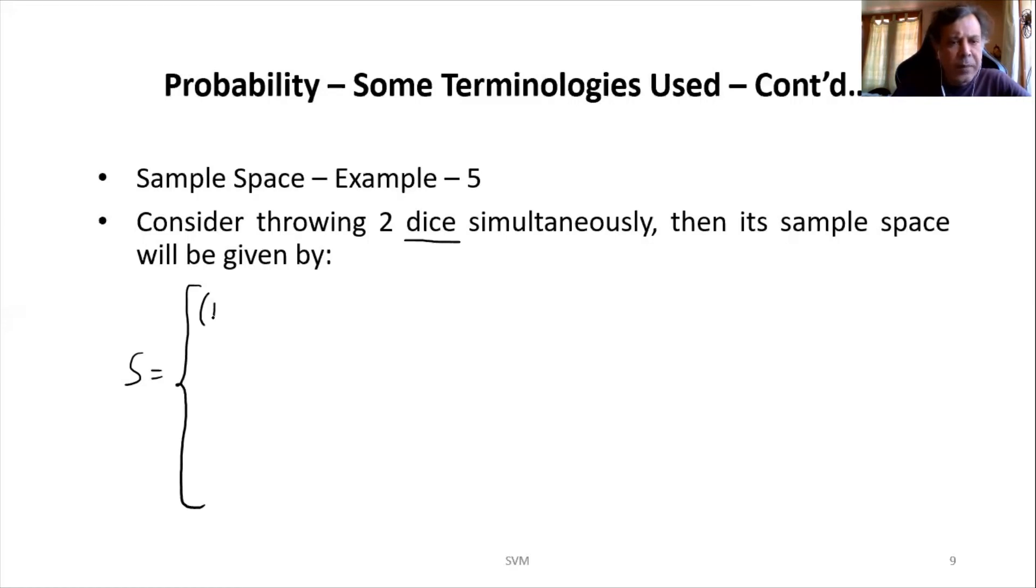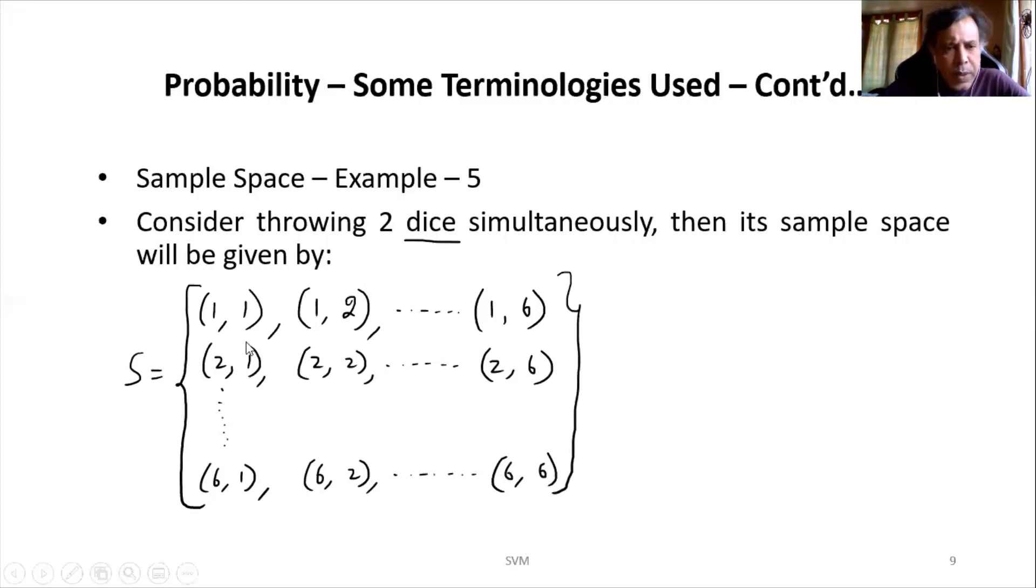So how do we write the sample space? First die can give me 1, second die also can give me 1. First die can give me 1, second can give me 2. Likewise, first die can give me 1 and second die can give me 6. Then first die can give me 2, second can give me 1. First can give me 2, second can also give me 2, and so on. First die can give me 2, second can give me 6. Likewise, and so on. First die can give me 6, second can give me 1. First can give me 6, second can give me 2, and so on.